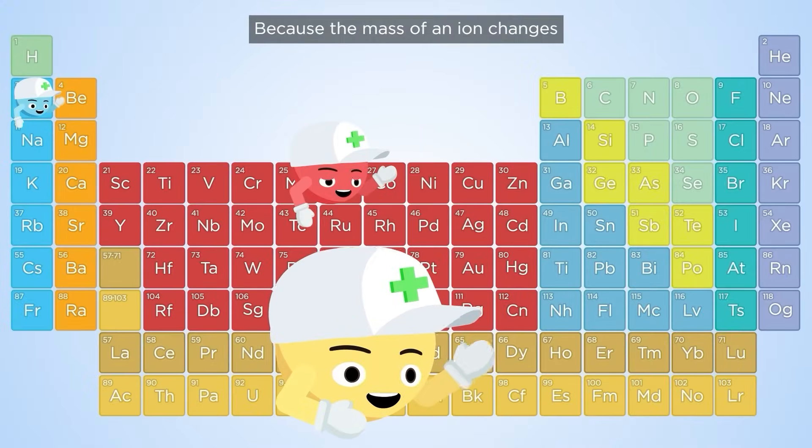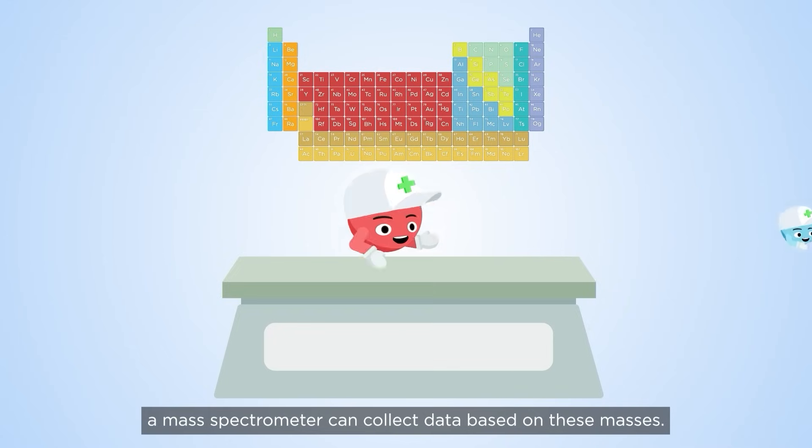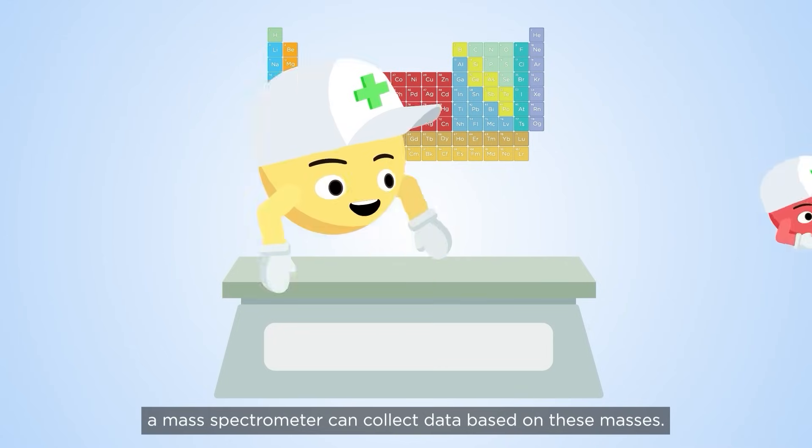Because the mass of an ion changes depending on its number of protons and neutrons, a mass spectrometer can collect data based on these masses.